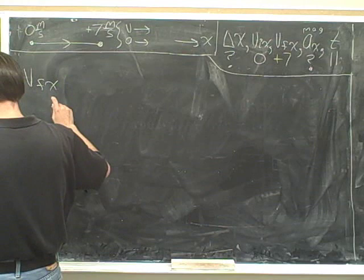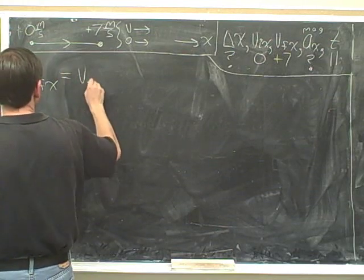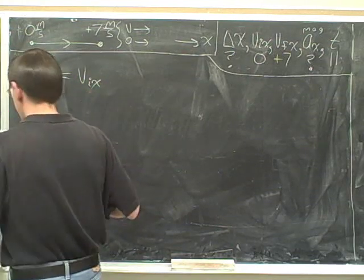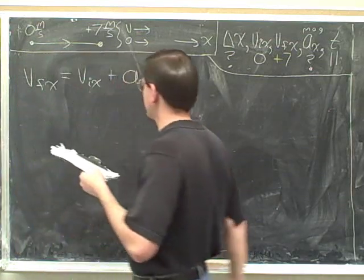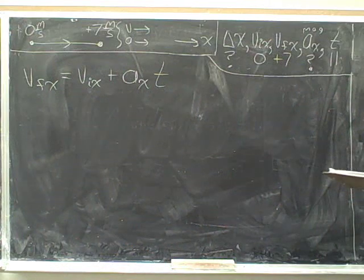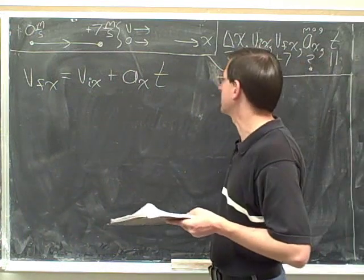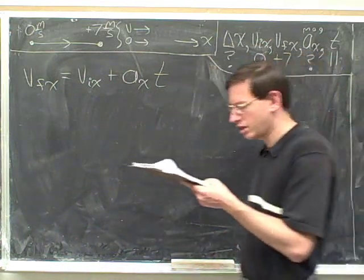V final x equals V initial x plus a sub x times the time. This is the equation that's missing delta x.